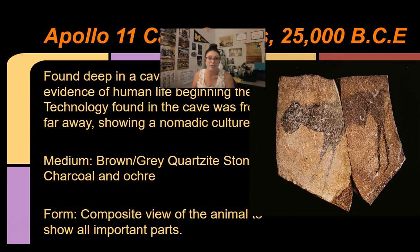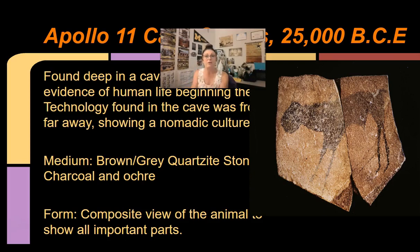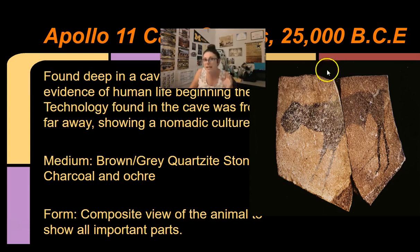The Apollo 11 Stone is found deep within a cave in Namibia, Africa, supporting the theory that life began there since it dates as old as any art ever found. It's made of quartzite stone and created using charcoal and ochre — natural pigments like reds, yellows, and earth tones. The natural colors were chosen to look like actual animal skin. Its placement deep in the cave suggests most likely some kind of religious or shamanistic significance.